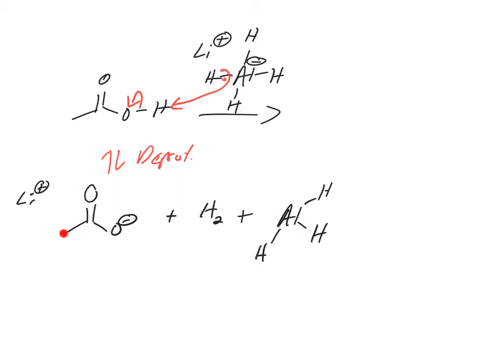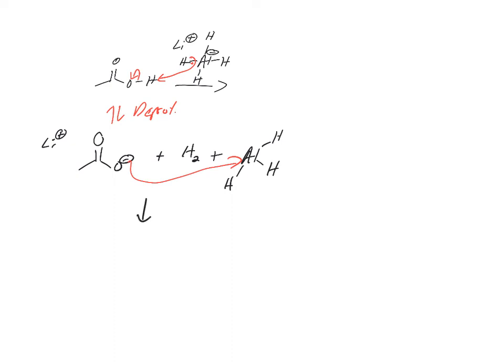Now, this is weird — what are we supposed to do with this? You've got to remember your octet rule. Aluminum does not have a full octet right now. It has two, four, six electrons around it. It's in the third row. It doesn't have a charge, but it has an empty p orbital. So oxygen loves aluminum, and they're going to add together.